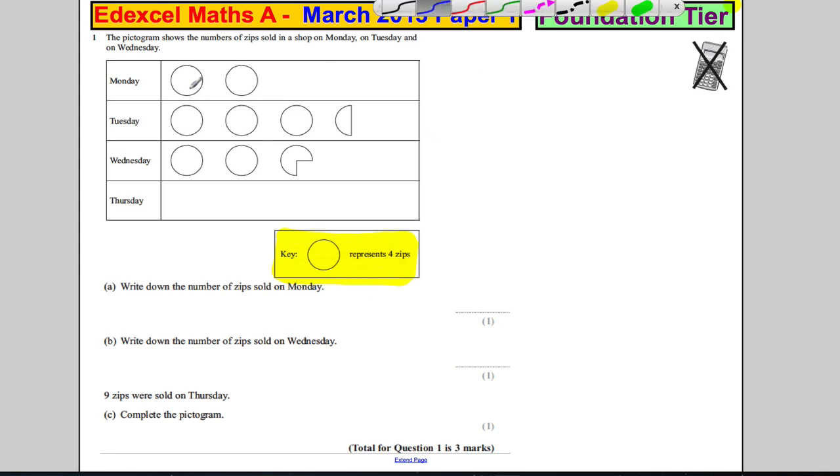So just before we go to the question, that's four, that's four. Tuesday, that's four, that's four, that's four. That's half a circle, so clearly that must be two.